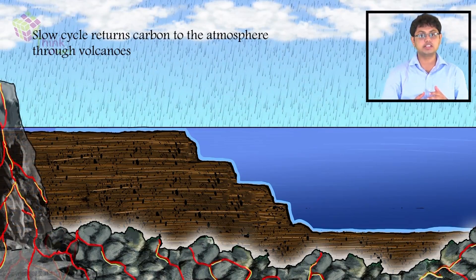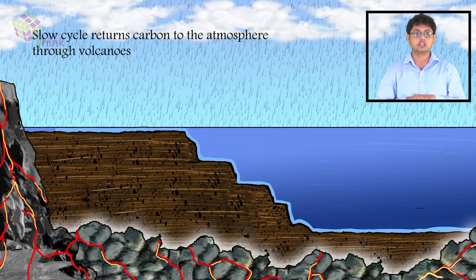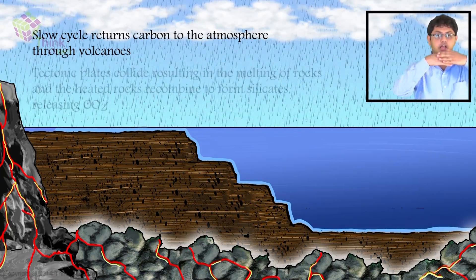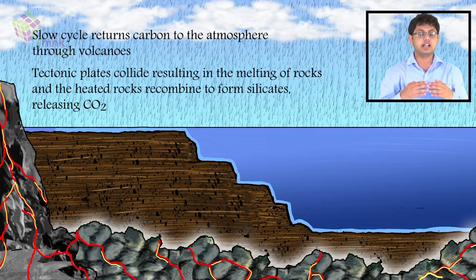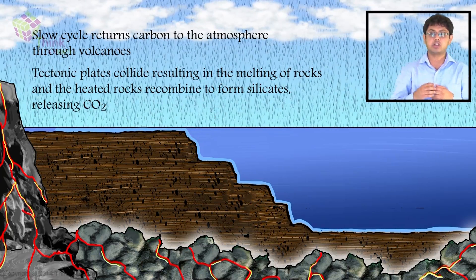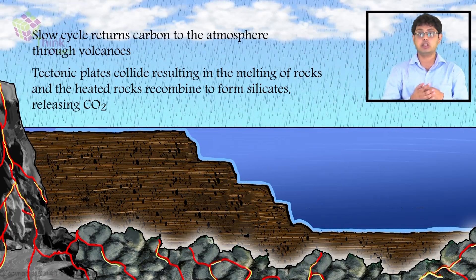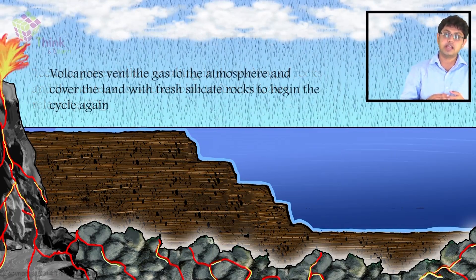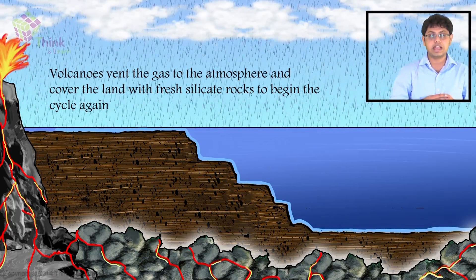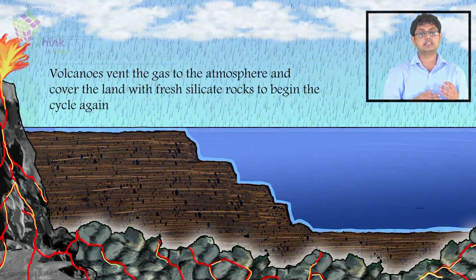Earth's land and ocean surfaces sit on several moving crustal plates. When the plates collide, one sinks beneath the other and the rock it carries melts under extreme heat and pressure. The heated rock recombines into silicate material, releasing carbon dioxide. When volcanoes erupt, they vent the gas to the atmosphere and cover the land with fresh silicate rock to begin the cycle again.